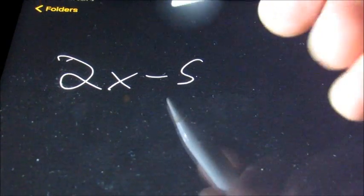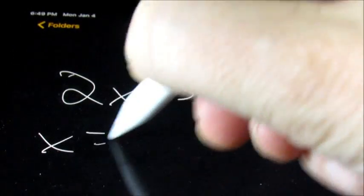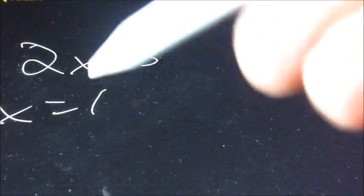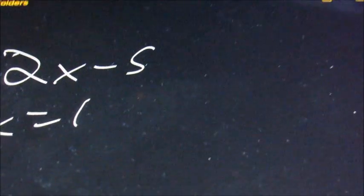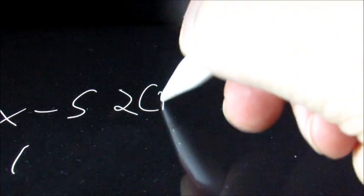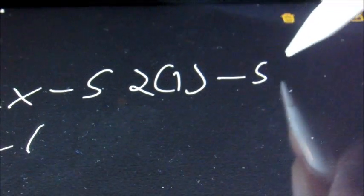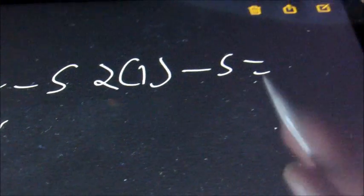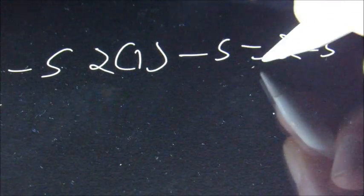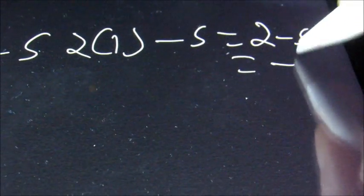Next, we're going to be given something a little more complex, say 2x minus 5, and first when x is 1. So we're going to put a 1 in every time we see the x, and I recommend that you put parentheses here. So it's going to be 2 times 1 minus 5. Do the order of operations: 2 times 1 is 2, minus 5.